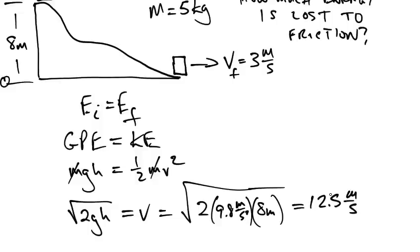So that's how fast it should be going. It should be going 12.5, but it's not. It's only going 3. So how much energy was lost?